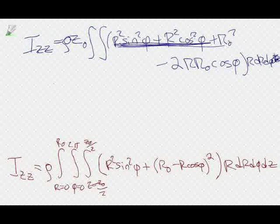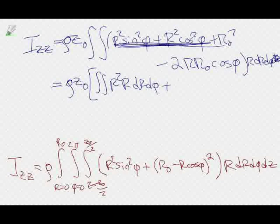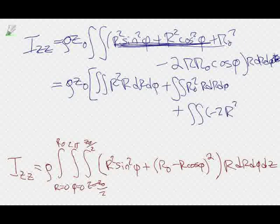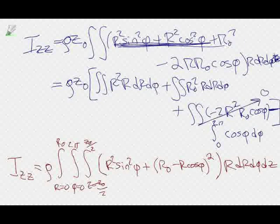Whenever you see sin squared plus cos squared, that's just one. So r squared sin squared φ plus r squared cos squared φ equals r squared. And the integral from 0 to 2π of cosine φ dφ is zero, so that term vanishes.